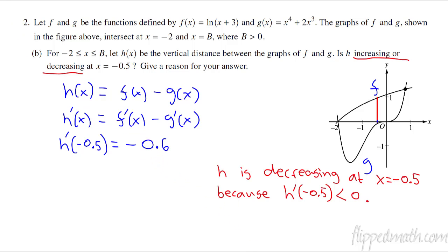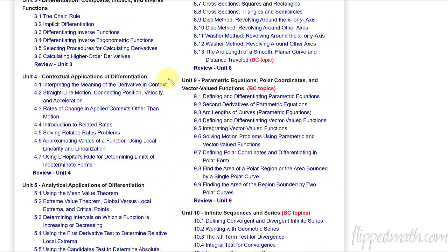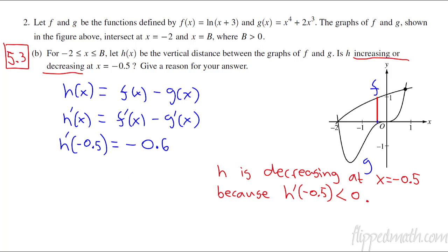Part B is done. If you weren't sure how to do that one, you could look back at lesson 5.3 — there are links in the description of the video. Lesson 5.3 is called 'Determining intervals on which a function is increasing or decreasing.' In this case, it wasn't actually an interval — it's just a point, so it's a little easier than an interval.